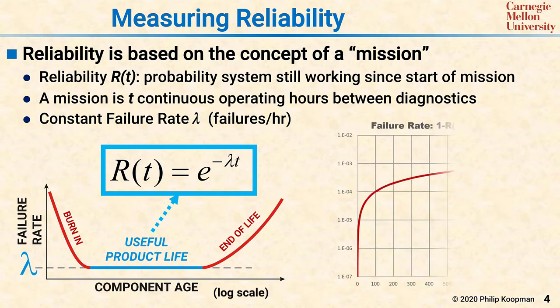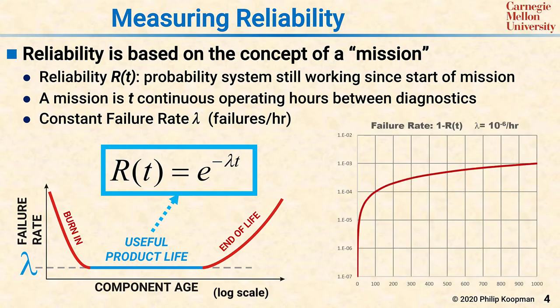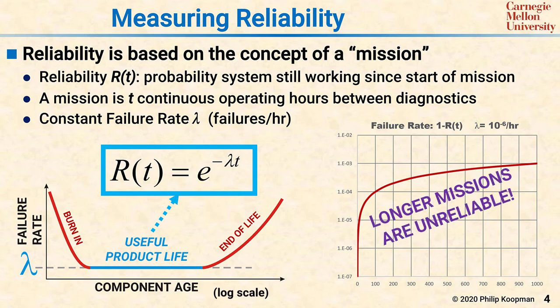This graph shows a reliability curve for an example of one failure every million operating hours. As you can see, long missions are unreliable — note the very steep increase in unreliability as missions become longer than even a few hours. Thus, if you need to run a lot of long missions, you need very aggressively low values of lambda, much lower than 10⁻⁶ per hour at the system level. Some systems operate continuously, so the idea of a mission is tricky — you need to occasionally take the system offline to do diagnostic tests and restart the mission clock, often by switching between a primary and standby system.